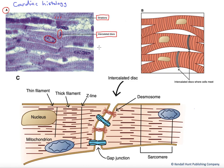This is unlike skeletal muscle that has numerous nuclei per cell due to it being formed by cell fusion. Finally, we would also see many, many mitochondria in cardiac muscle. This is a tissue that is adapted to produce significant amounts of ATP aerobically, so the presence of large numbers of mitochondria serve that purpose.